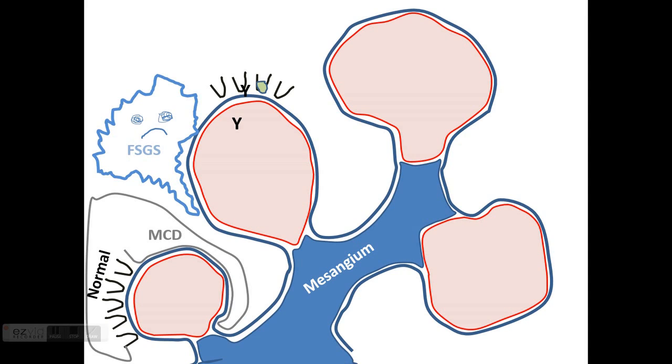Complement also gets activated, resulting in effacement of foot processes and formation of subepithelial deposits. These deposits interfere with podocyte attachment to the basement membrane, so the basement membrane starts creating spikes to help podocytes attach better.